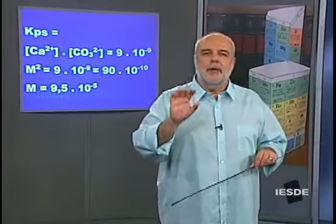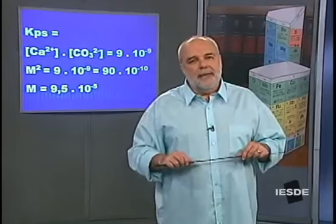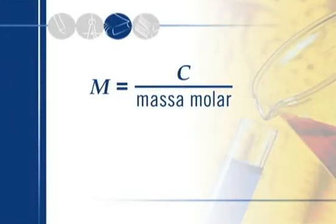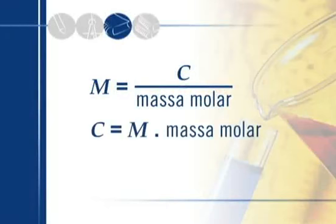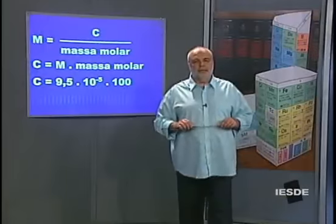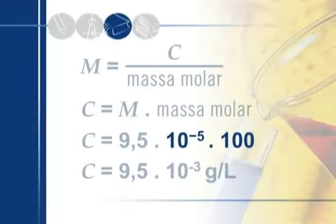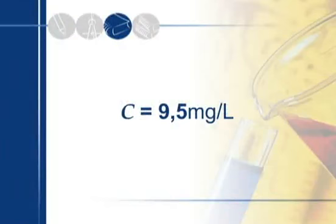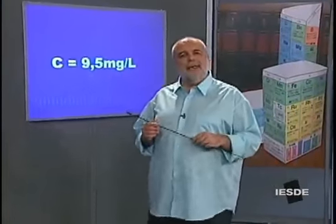Terminar o exercício é apenas um pequeno passe de mágica: precisamos passar para miligramas por litro. Como concentração = molaridade × massa molar, temos concentração = 9,5 × 10⁻⁵ × 100 (massa molar do CaCO₃) = 9,5 × 10⁻³ gramas por litro. Como 10⁻³ gramas por litro é exatamente miligrama por litro, a solubilidade do carbonato de cálcio é 9,5 mg/L — uma concentração extraordinariamente baixa.